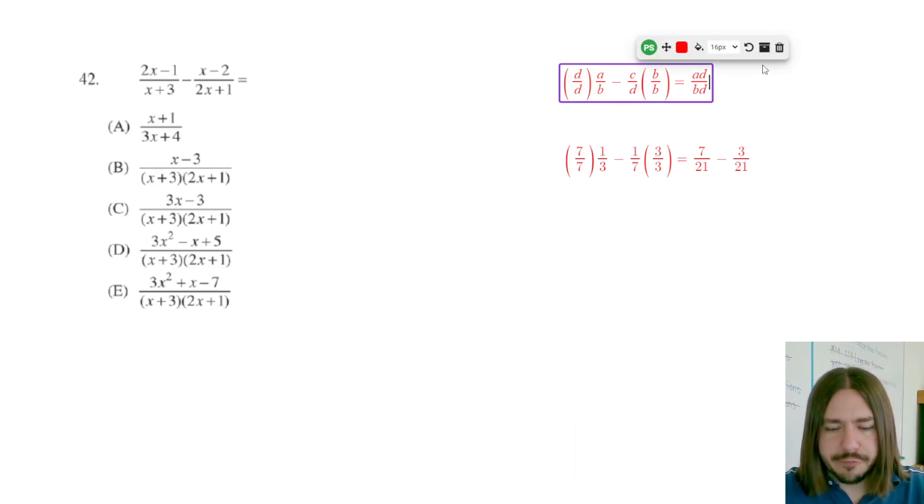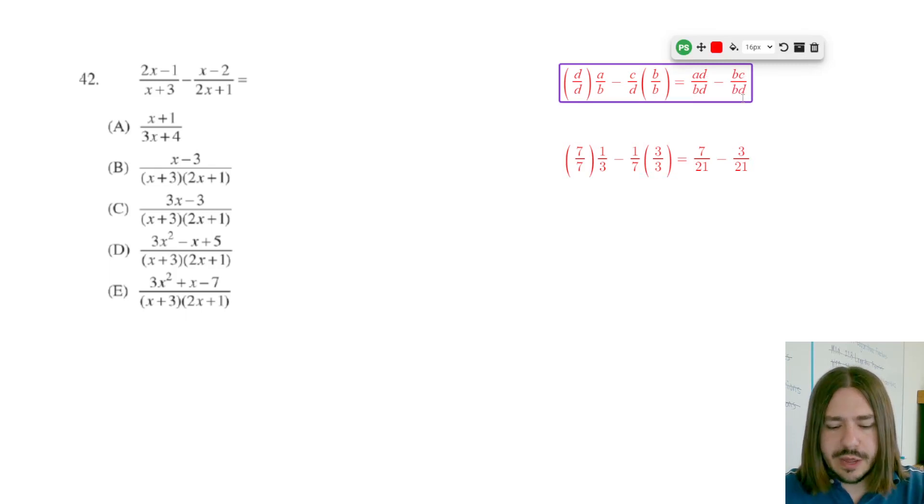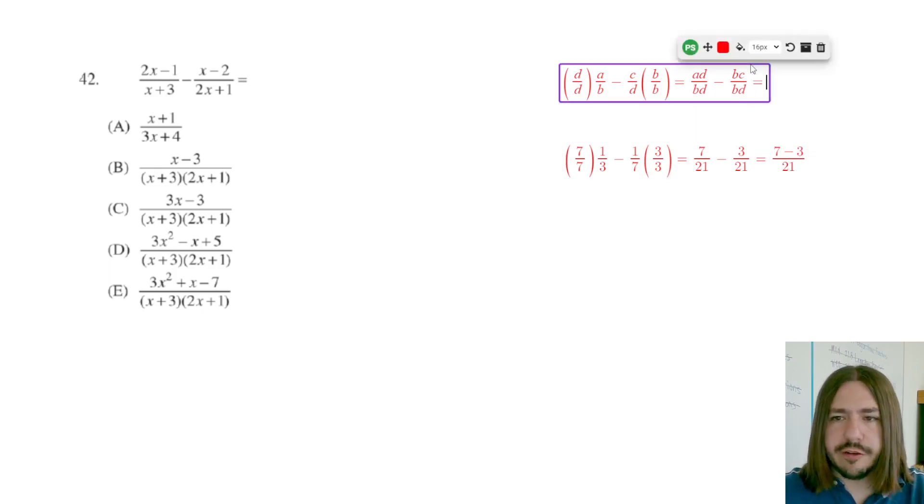Just trying to keep it in alphabetical order minus and then over here, I've got c times b or bc over bd. So notice in both of these cases, I now have the common denominator. And so now I can subtract. And when you subtract after getting the common denominator, you just subtract the numerators. So here I have like seven minus three over 21. Here I would have ad minus bc over bd.